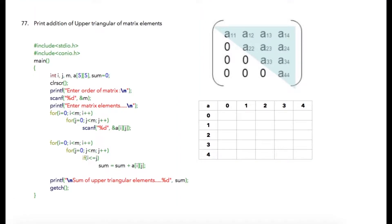In this lecture, we are going to find the addition of upper triangular elements of a given matrix. In this image, the area highlighted in light green color is the upper triangular matrix. If you notice a very important pattern with respect to rows and columns, all the row numbers are less than or equal to the column number.